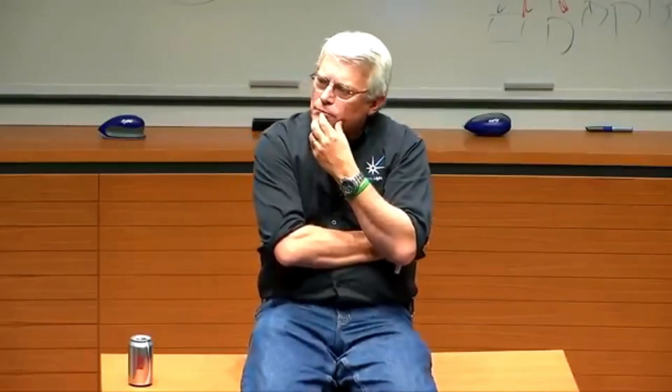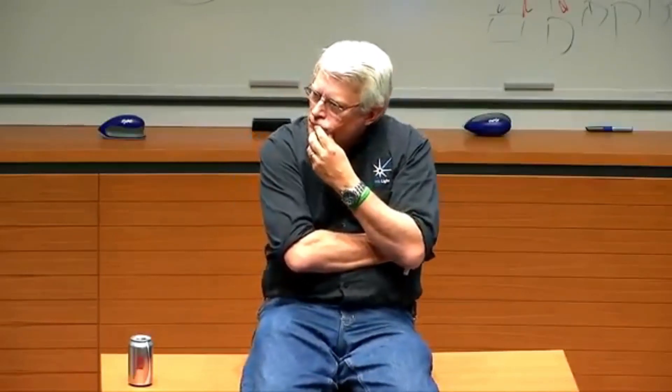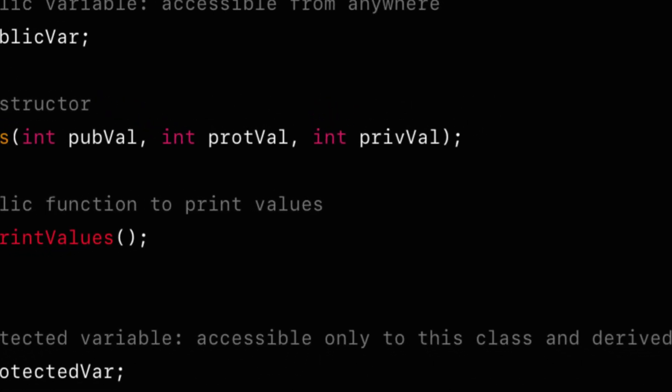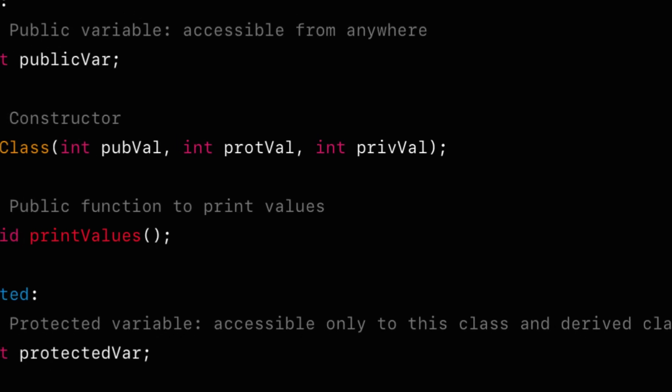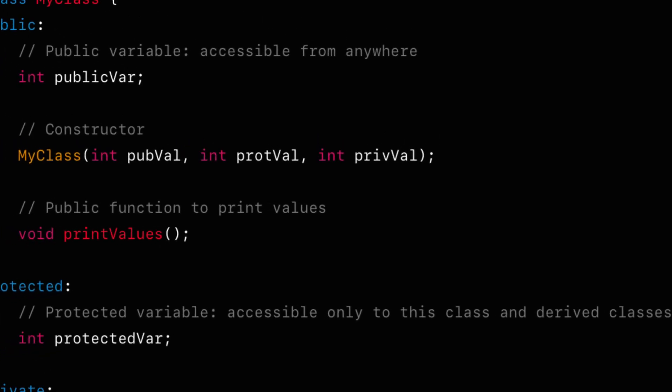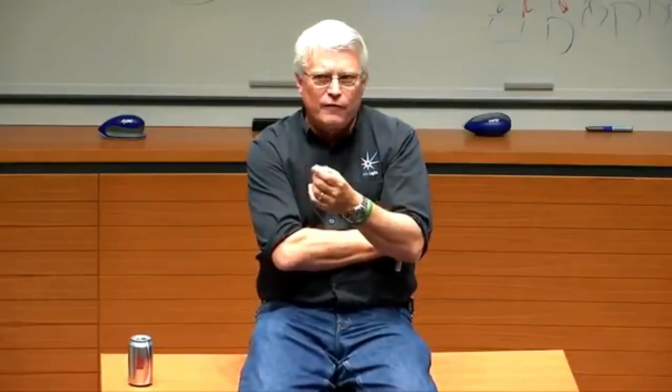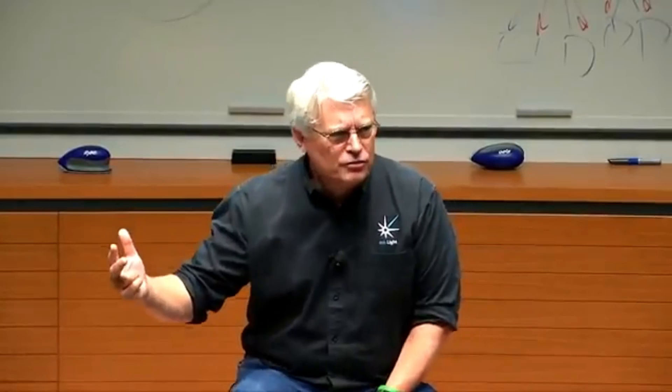Objects completely screwed that up. C++ came along and put all the variables in the header file. What did that do? Well, it meant all the variables were suddenly visible to everybody. And in order to get that under control, we had to invent these horrible hacky words: public, private, protected. Terrible hacks. Ridiculous.